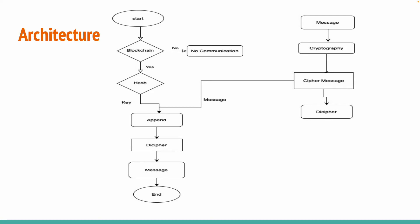For the architecture, first we will go through the process of blockchain, then the process of cryptography, then combine them, and then decipher the message. This process can be used by any website for a chatbot or communication system. It can be used through any communication application like Meta for WhatsApp or Instagram — any messaging app — to make our system more protected.